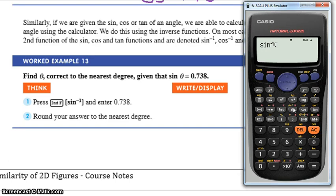Now, all you do is exactly the same you did when you had the angle. You just put in 0.738, close your brackets. And what you're doing is actually finding the angle rather than the ratio. Enter that, and that's your angle. 47.56 degrees.